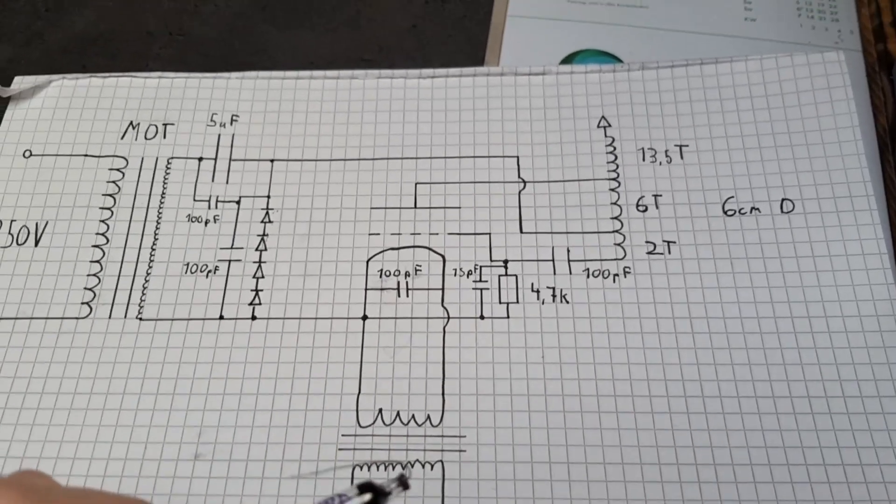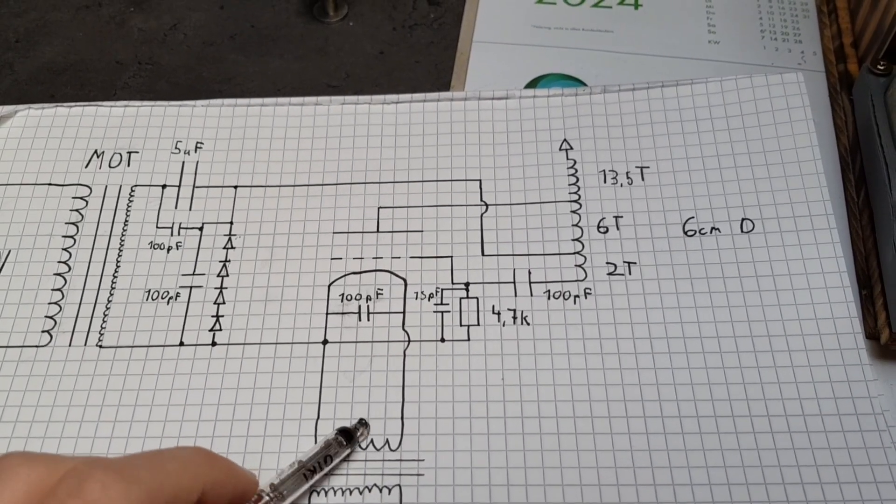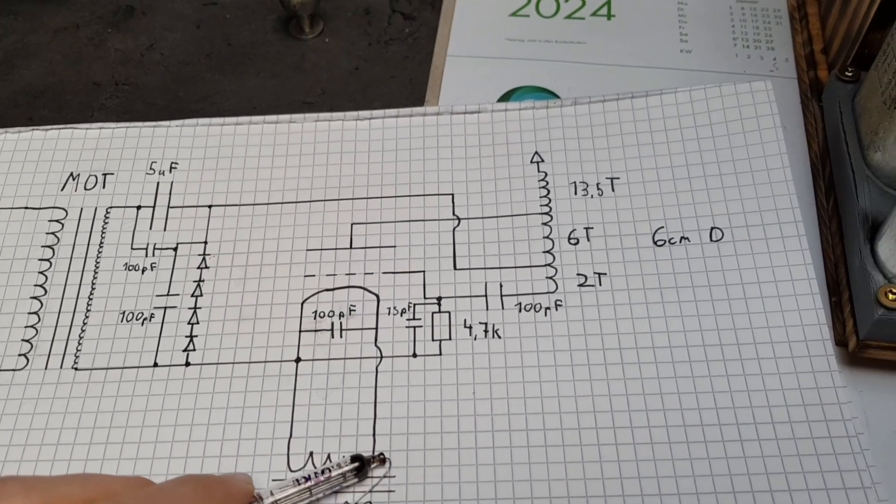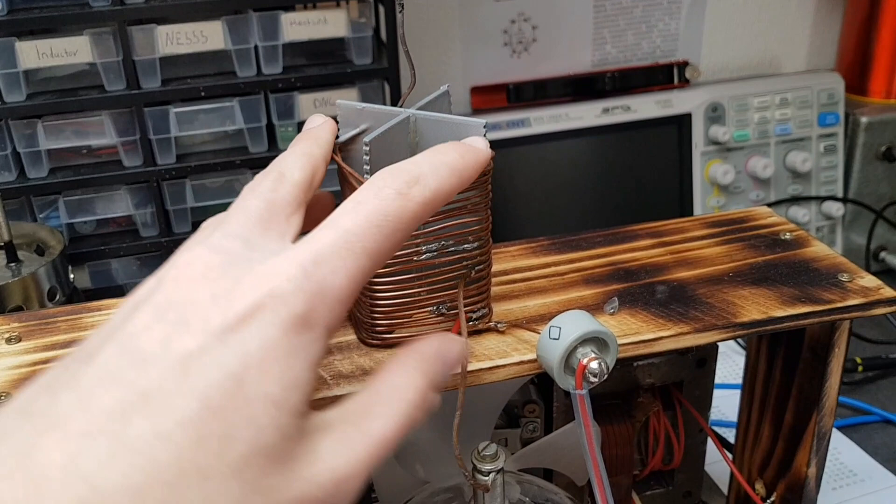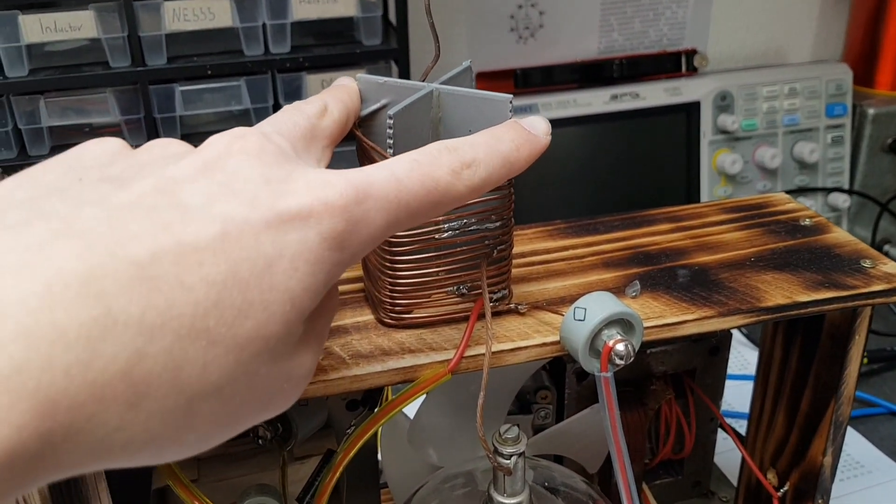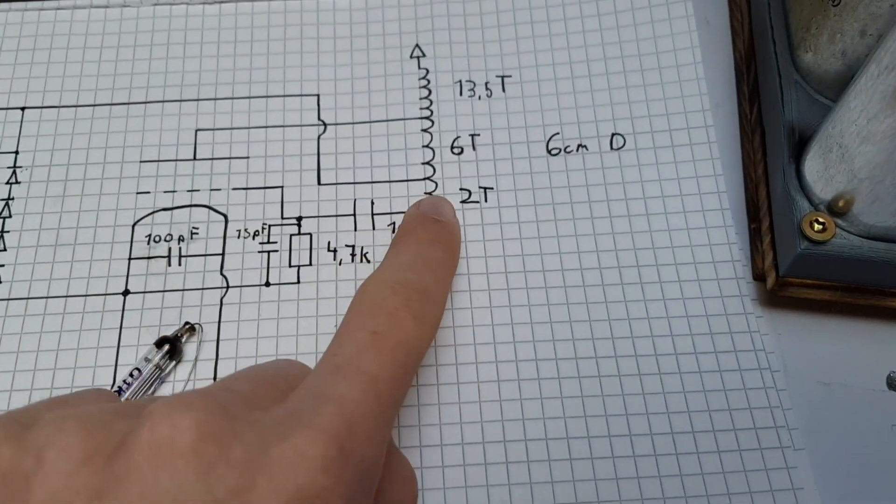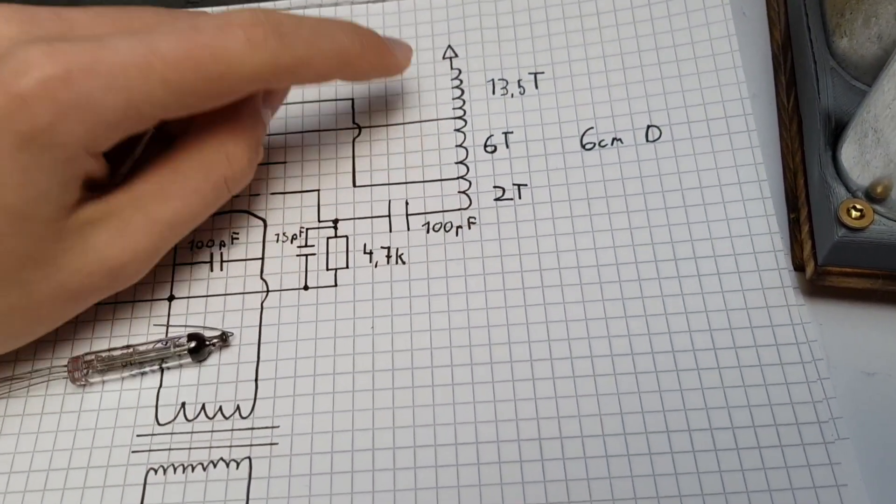The resonator itself has a six centimeter diameter and two turns feedback. Yeah, I don't know if you count this as a primary, but basically yes, and this is your resonator.